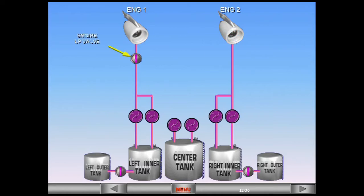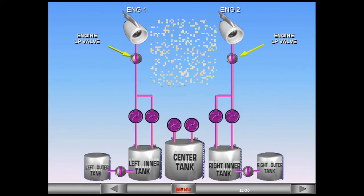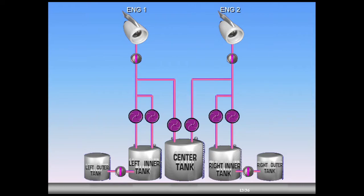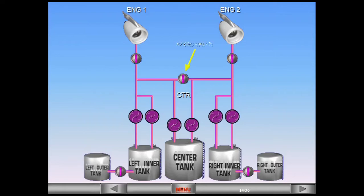Two engine low-pressure valves are installed to cut off fuel to the engines. The center tank also feeds the engines. A cross-feed valve is fitted to connect or isolate the left and right sides.